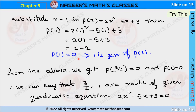So 2 minus 2 is 0. Therefore, p of 1 is equal to 0, and we can say that 1 is a zero of p of x. From the above, we get p of 3/2 equal to 0 and p of 1 equal to 0. Therefore, we can say that 3/2 and 1 are the roots of the given quadratic equation 2x² minus 5x plus 3 equals 0.